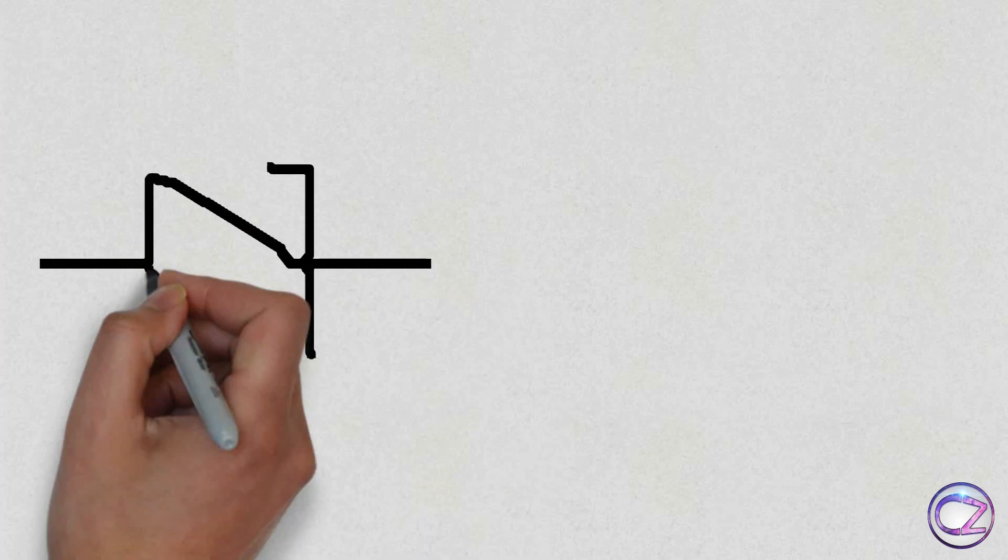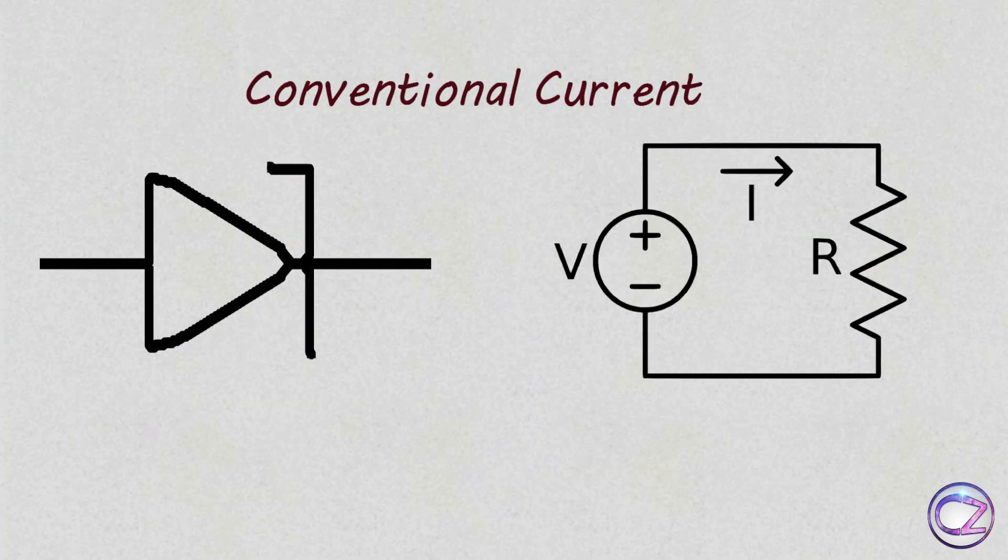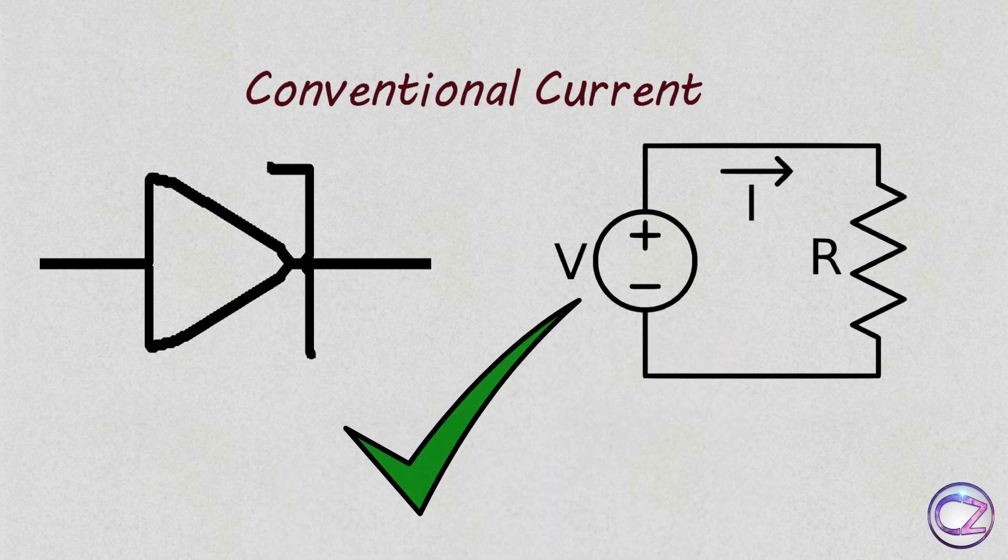Now the question is, are they wrong? No, not really. Actually all of our symbols and circuit diagrams are designed by conventional current, and these symbols work better with conventional current flow.